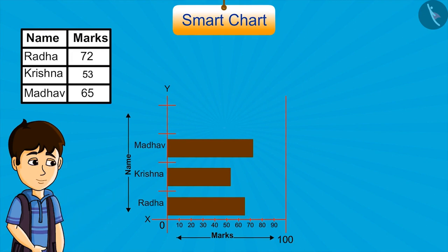You can see that according to the chart, Radha got 65 and Madhav got 72. This is very unfair with Radha. We cannot show wrong data like this.